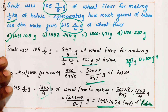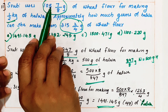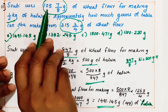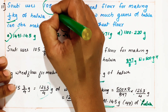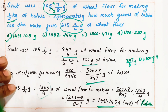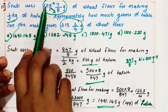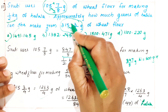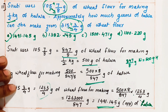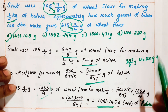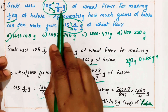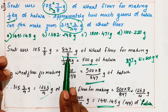So the answer is 1491.145 grams. This is called the unitary method. Two things you should know: how to convert a mixed fraction to an improper fraction — we multiply the whole number and denominator and add the numerator. So 105 7/8 is nothing but 847/8, and 315 3/4 is nothing but 1263/4.